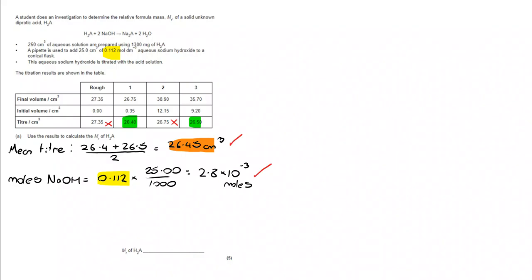Once I know the moles of NaOH, I can work out how many moles of H2A that we're reacting with. My moles of acid in the reaction, well, I know it's related to 2.8 by 10 to the minus 3.